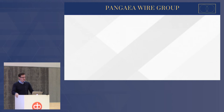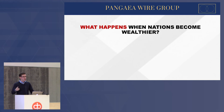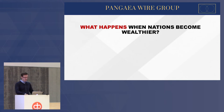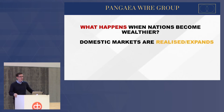Understanding how nations become important: what happens when nations become wealthier? There are about four main points. Firstly, they become more important to the international order and to how trade works. Domestic markets are realized and expand, which makes them attractive for foreign investors and exporters. The Chinese market is the biggest market — many people want to sell into that — and China uses that as leverage in their negotiations.